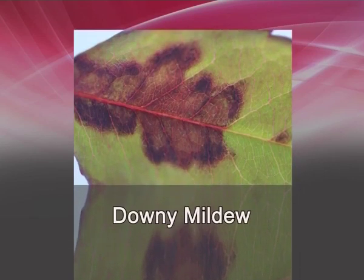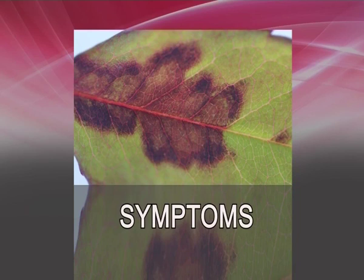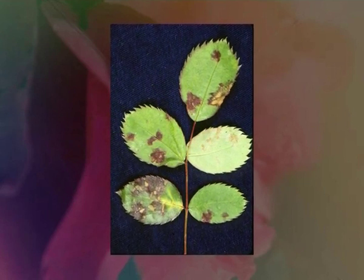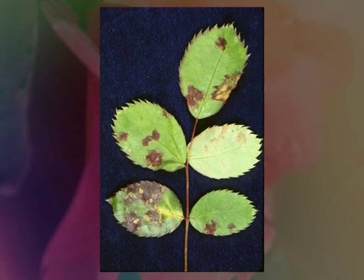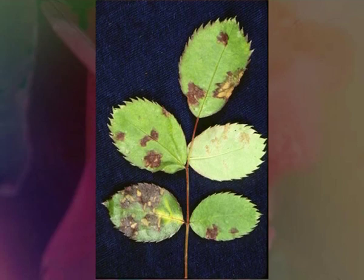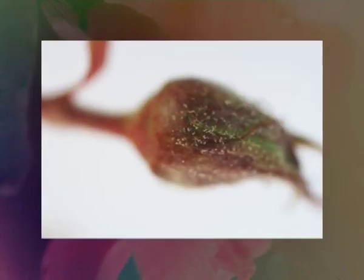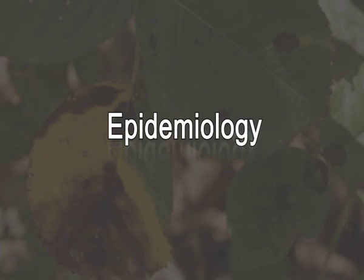The next important disease is downy mildew. It is caused by Peronospora sparsa. Symptoms: initially the symptoms appear as pinkish-brown irregular spots on tender tips. The fungus causes chlorotic blotches on the upper surface of matured leaves, which ultimately become necrotic. The infection on flower buds occurs very early and leads to total dying of flowers. Epidemiology: relative humidity of about 85 percent and temperature around 18 degrees centigrade are optimal for multiplication of this fungus.